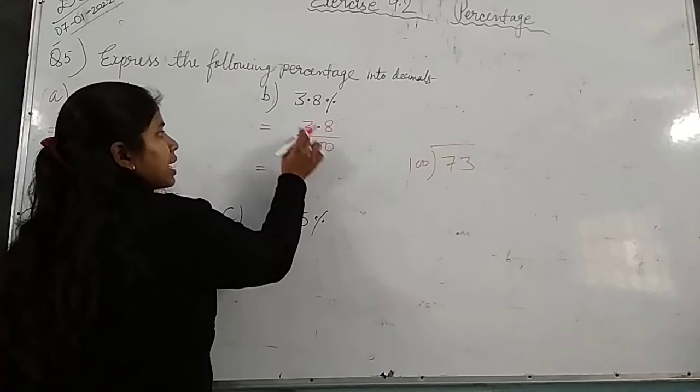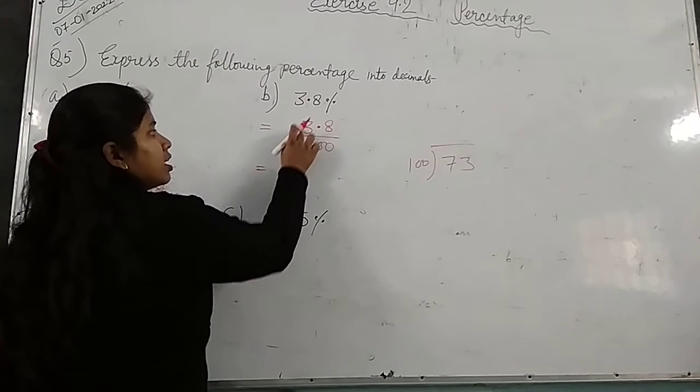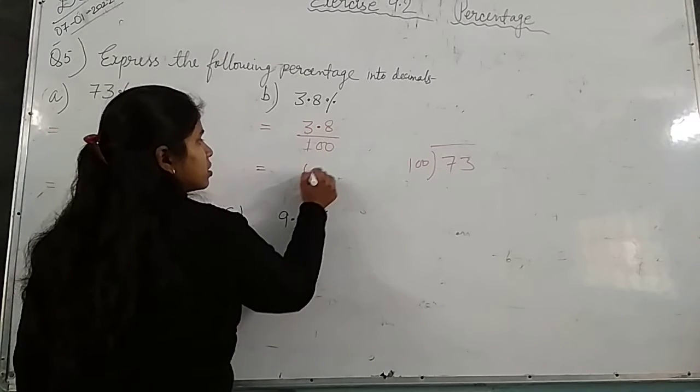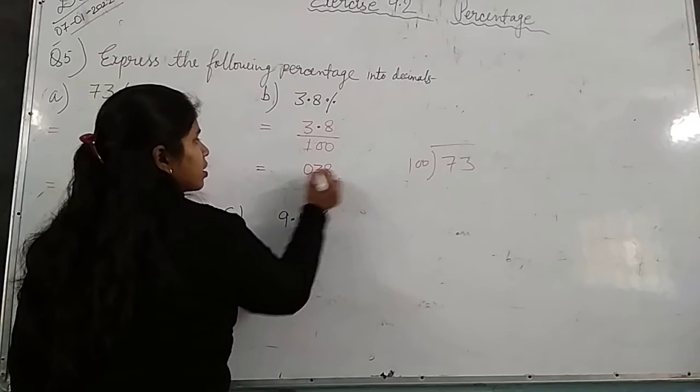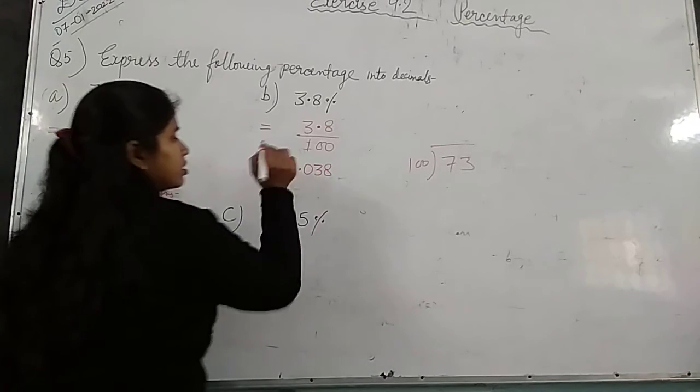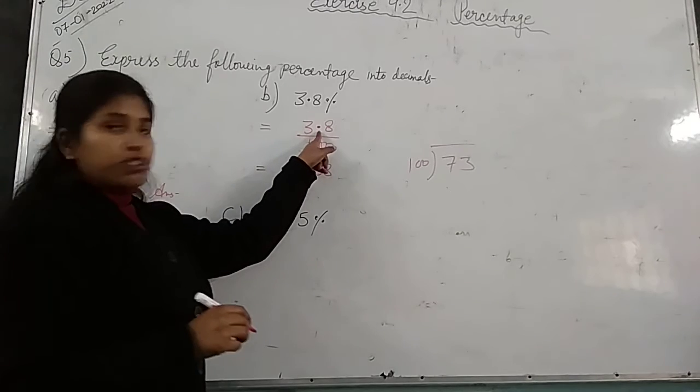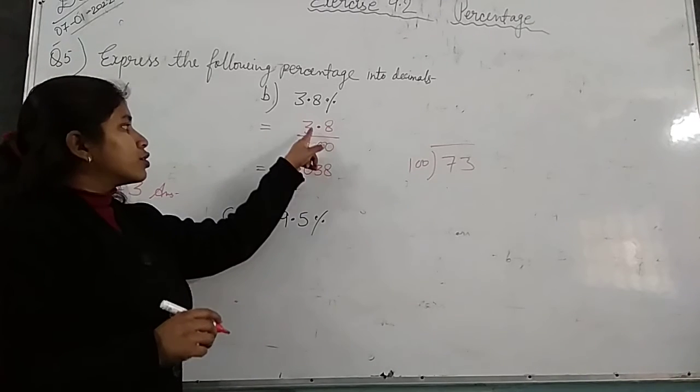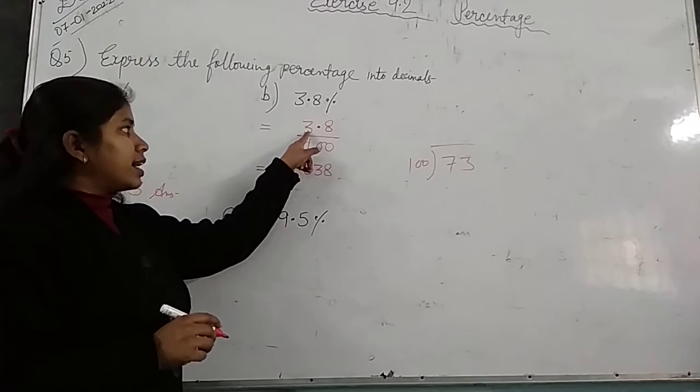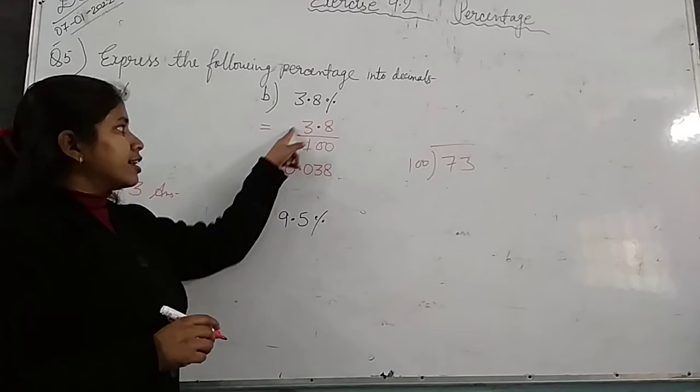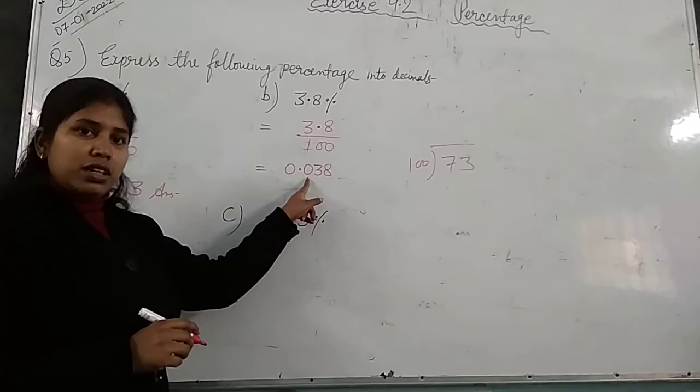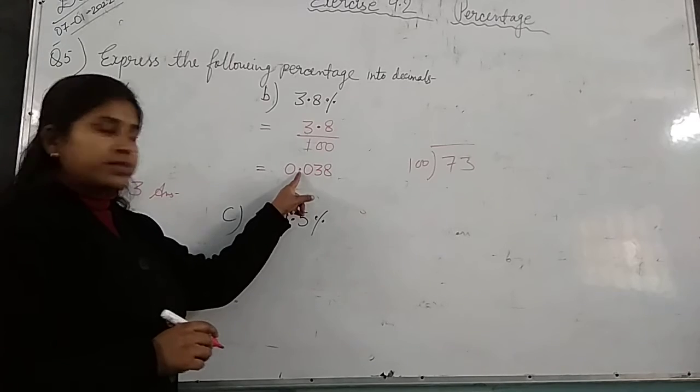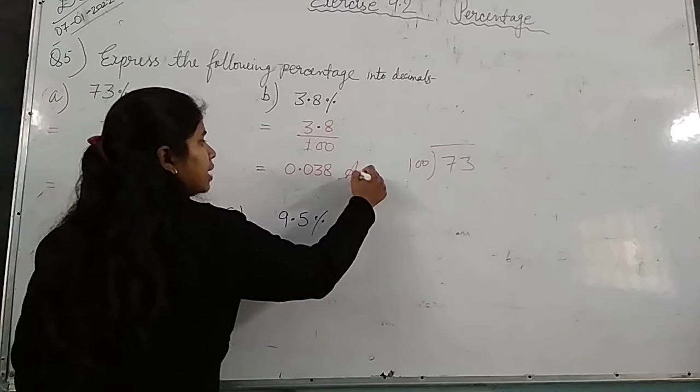Now count here, so two digits equal: one, two. Here no digit exists, so we place zero. Your point is here. And here no digit exists, so we take zero. And we place the point. This will be your answer: 0.038.